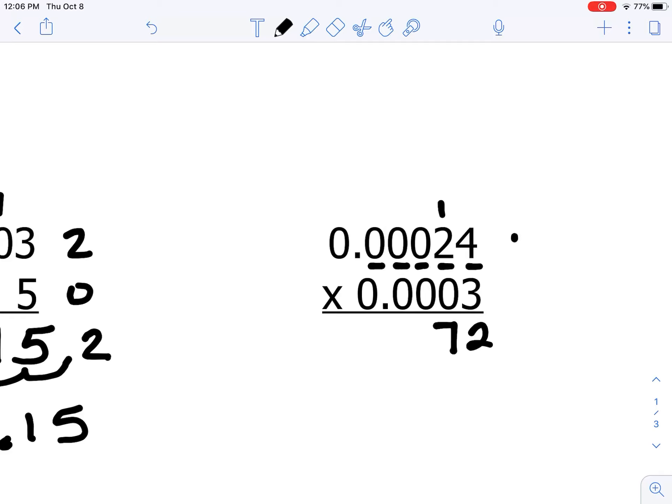And from here, we're going to have to count the decimal place values. 2, 3, 4, 5. There's 5 in the top number. And 1, 2, 3, 4 in the bottom number. So that means we need 9 decimal place values altogether.